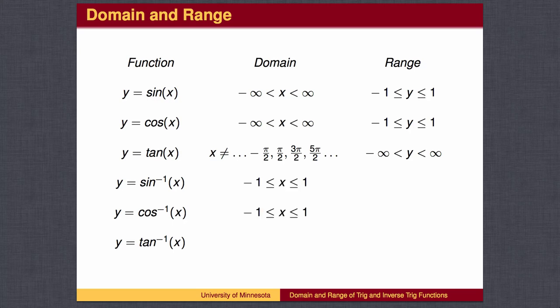It is tempting to think that the range of the inverse sine function is the domain of the sine function for the same reason, but there is a problem. There is more than one angle that has the sine value of 1 half. We need to decide between pi over 6, 5 pi over 6, and all the other angles whose sine is 1 half. For the inverse sine function, we pick the angles on the right half of the circle, namely the angles between negative pi over 2 and pi over 2.